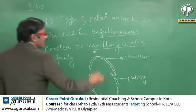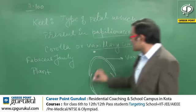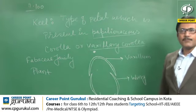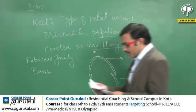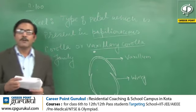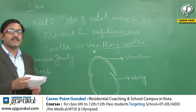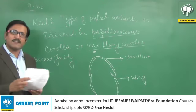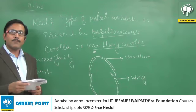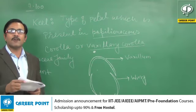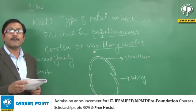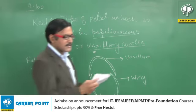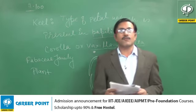This type of Corolla arrangement is a characteristic feature of the Fabaceae family. Tulip belongs to the Liliaceae family. Indigofera belongs to the Fabaceae family and it is the correct answer. Aloe also belongs to the Liliaceae family and tomato belongs to the Solanaceae family. So the correct answer is Indigofera.